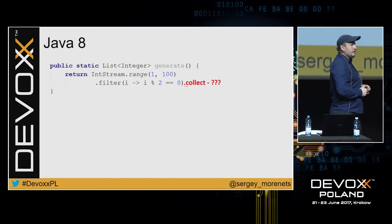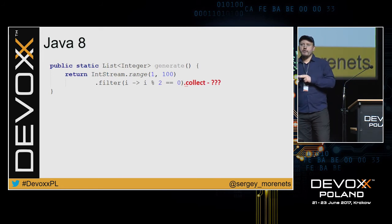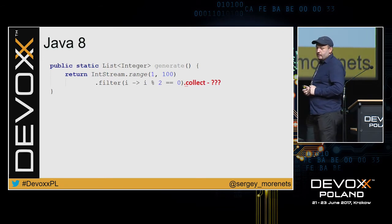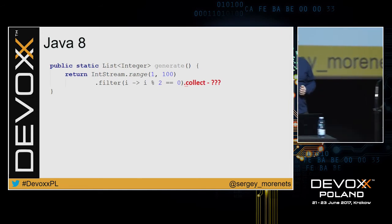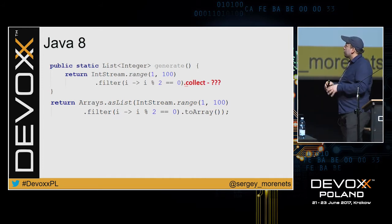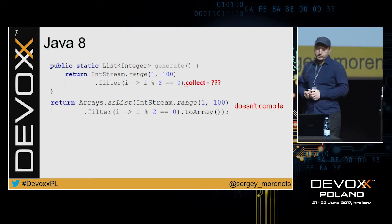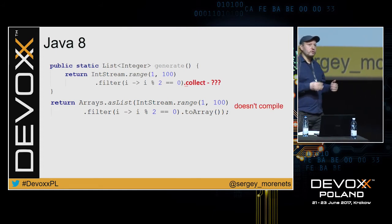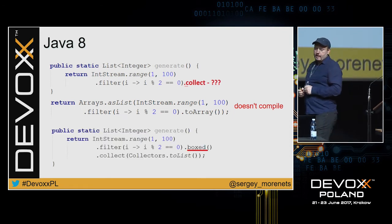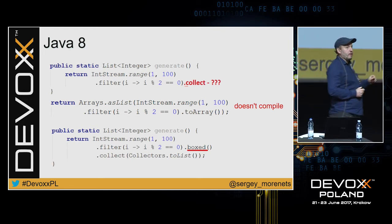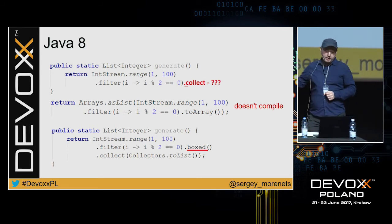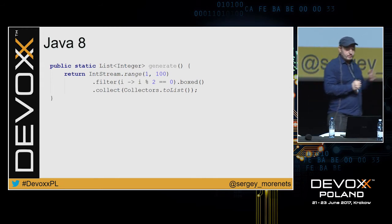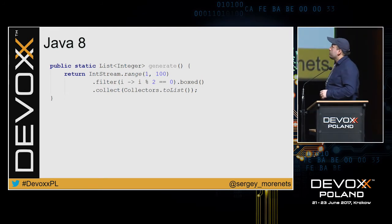Another example: you want to create a method that returns the first 50 even numbers. You try to use IntStream, but your draft implementation doesn't have collect — IntStream, DoubleStream, and LongStream don't have collect. You need collect to convert your stream to a list. The developer might try converting to an array and then to a list, but that's a lot of transformations and it doesn't even compile. If you use the streams API, stick to the streams API and don't do such transformations. The correct option is to use the boxed() function, which converts a primitive stream like IntStream to an ordinary Stream, and ordinary Stream has the collect method.